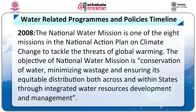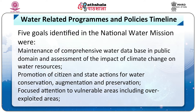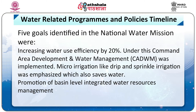The objective of the National Water Mission is conservation of water, minimizing wastage and ensuring equitable distribution both across and within states through integrated water resources development and management. Five goals were identified: maintenance of a comprehensive water database in public domain and assessment of climate change impact on water resources; promotion of citizen and state action for water conservation, augmentation and preservation; focused attention to vulnerable and over-exploited areas; increasing water use efficiency by 20% through command area development, water management, and micro-irrigation like drip and sprinkler irrigation; and promotion of basin-level integrated water resource management.